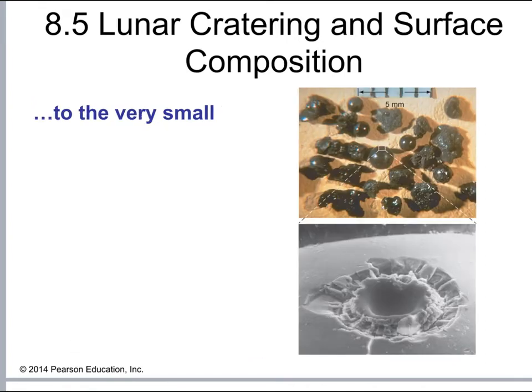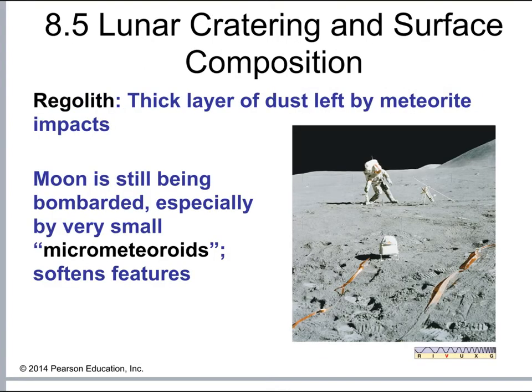Some craters are very, very tiny — on the order of millimeters — so there is a wide range of crater sizes across the surface of the Moon and Mercury. On the lunar surface, there is a layer of material called regolith — not quite dust, not quite sand, but something in between — left behind by these meteorite impacts, and it covers the entire surface of the Moon.